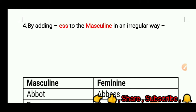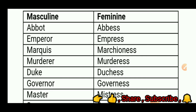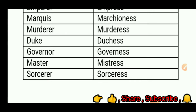Fourth, by adding -ess to the masculine in an irregular way. For example: abbot — abbess; emperor — empress; marquis — marchioness; duke — duchess; governor — governess; master — mistress; sorcerer — sorceress.